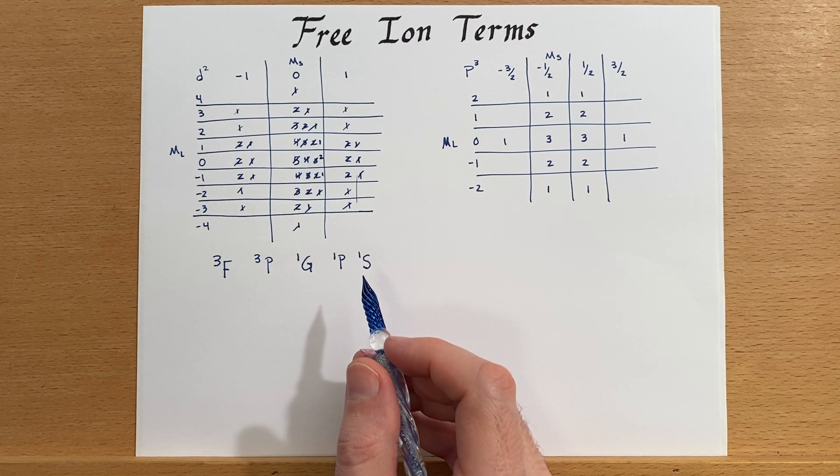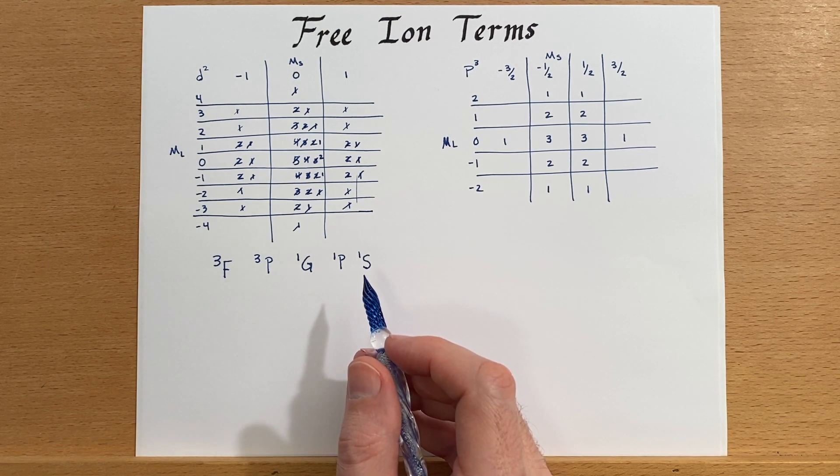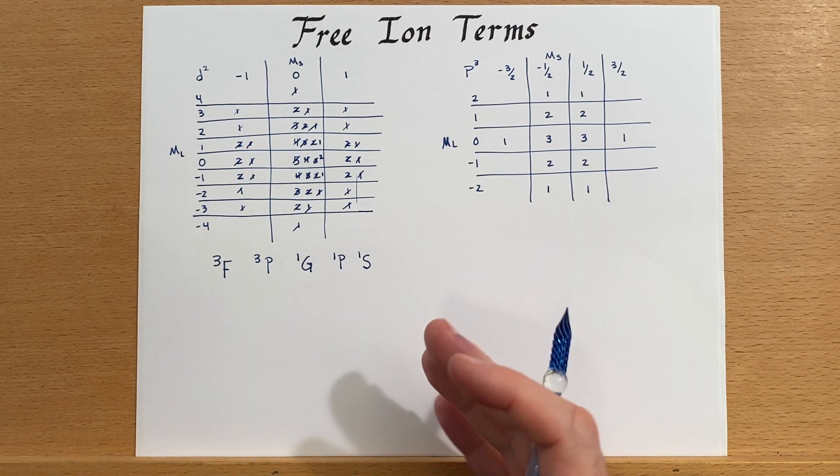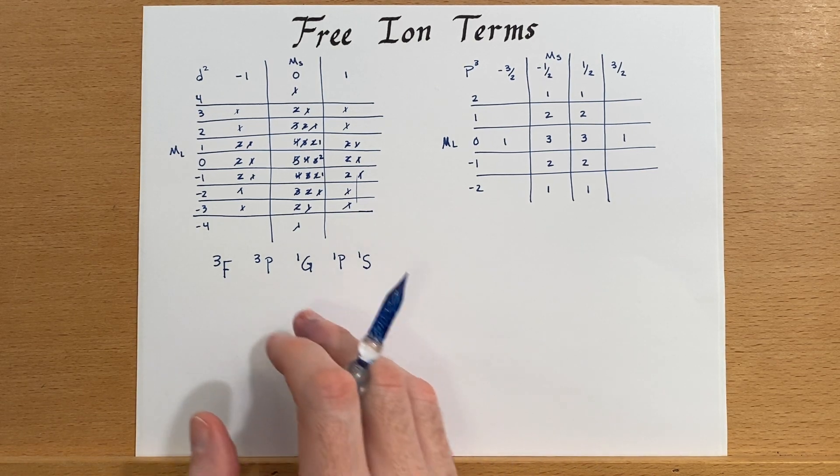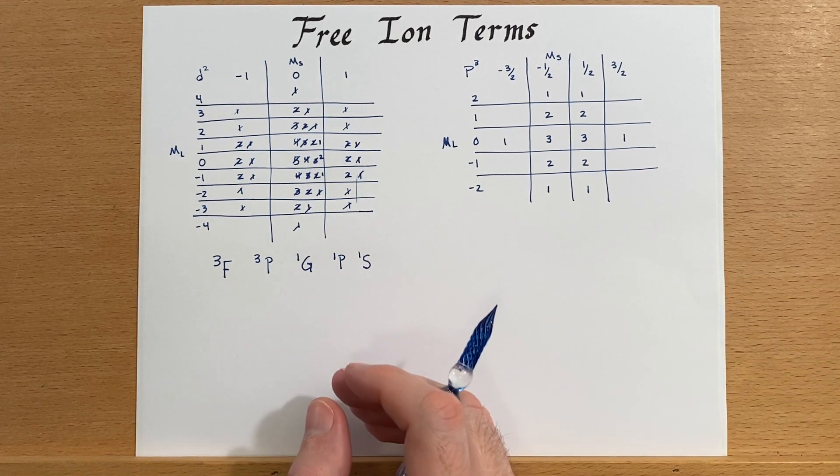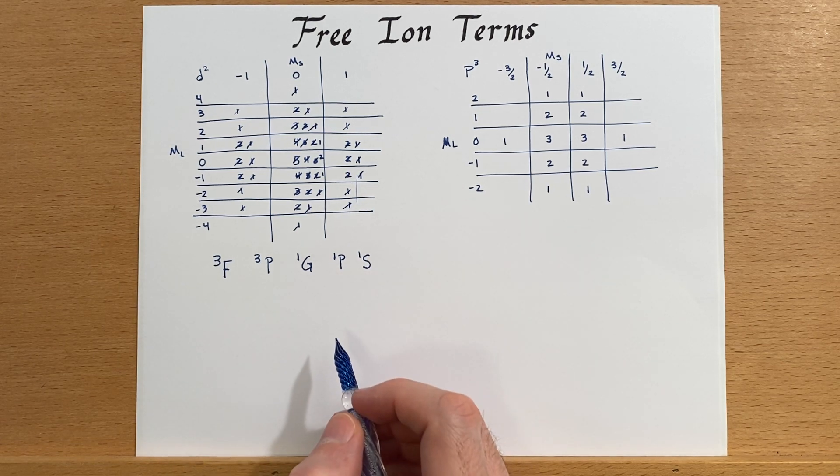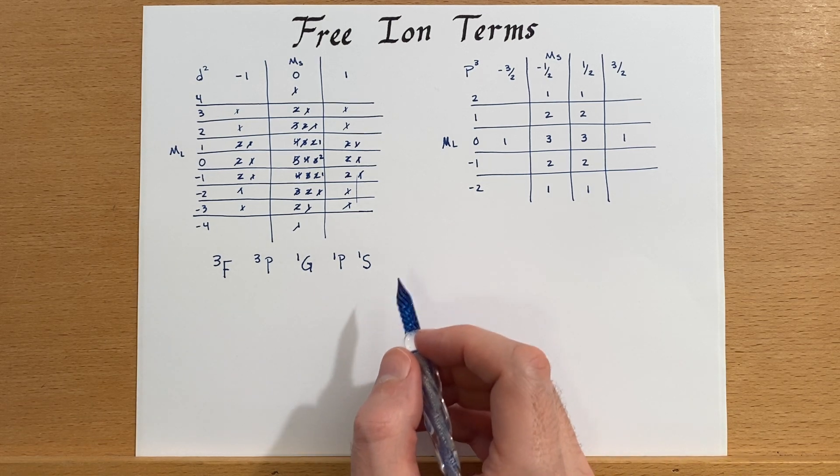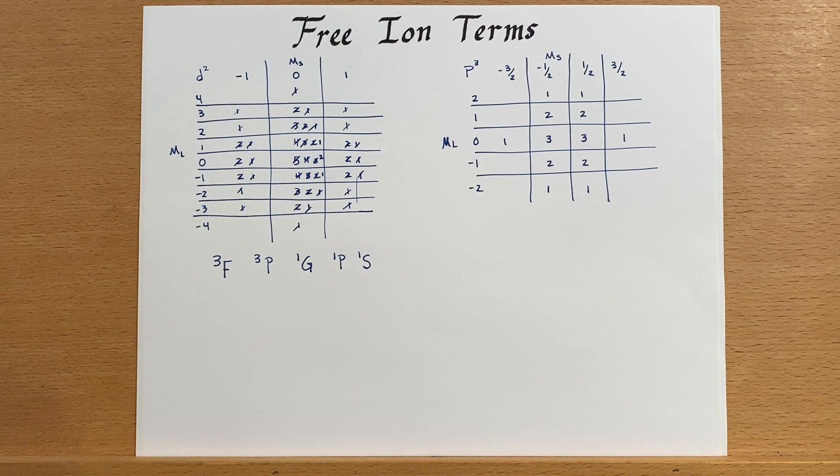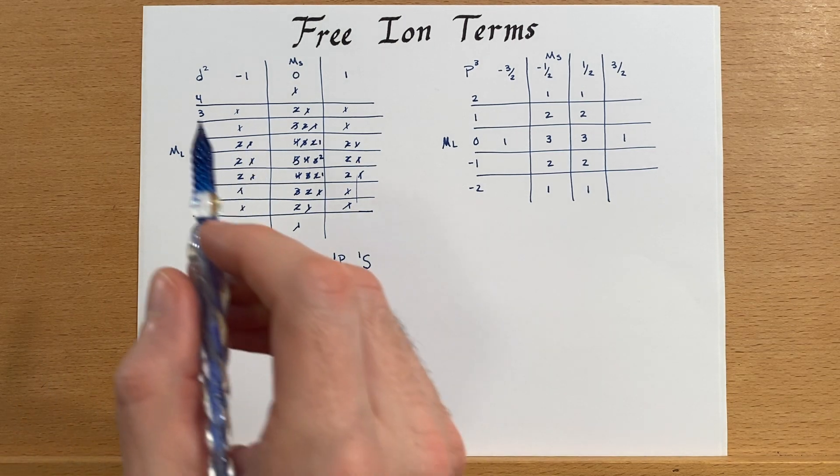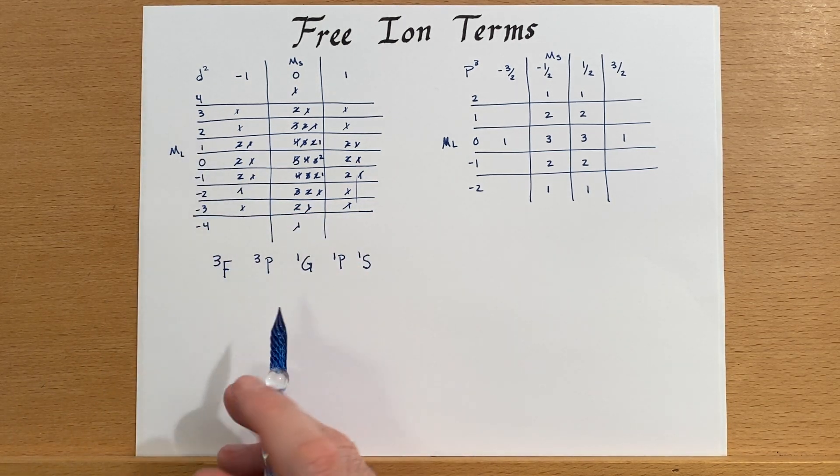And then after that, they decided we better be a little more systematic about it. So it then goes alphabetical order, but then of course, skips the ones that are already used, like P and S for the remainder. So there's the free ion terms for D2.